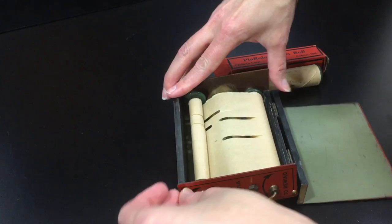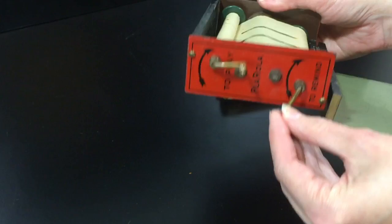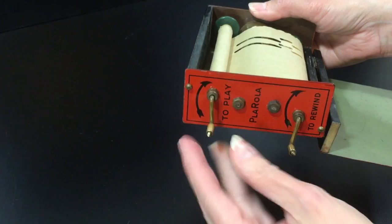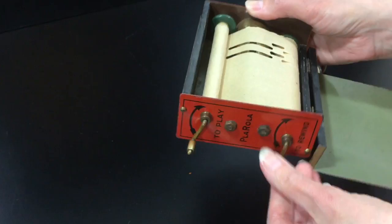This one's a little loose, so I think we're going to have to rewind it a bit to get to the front of the song. So there's two cranks on the side. One of them is for playing, one is for rewinding, and it just controls which direction the paper moves. So we're rewinding it to the beginning of the song. And now it's ready to go.